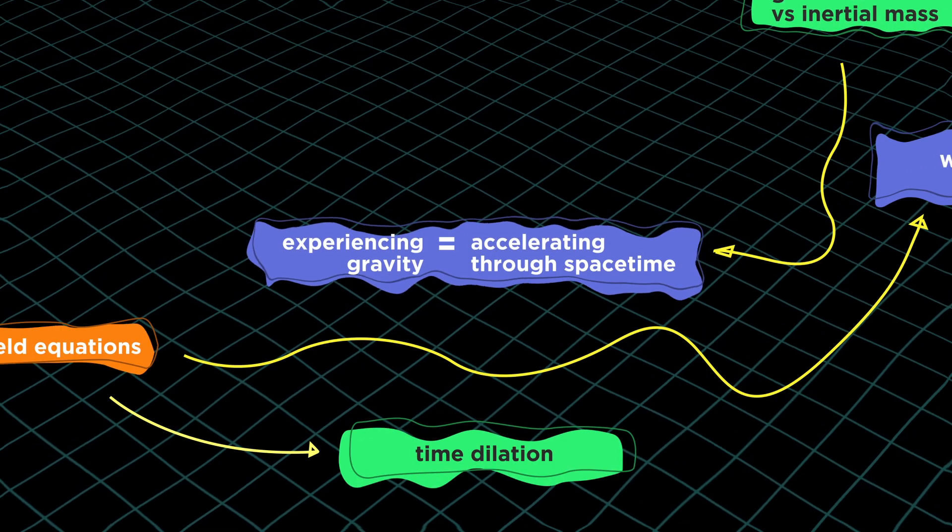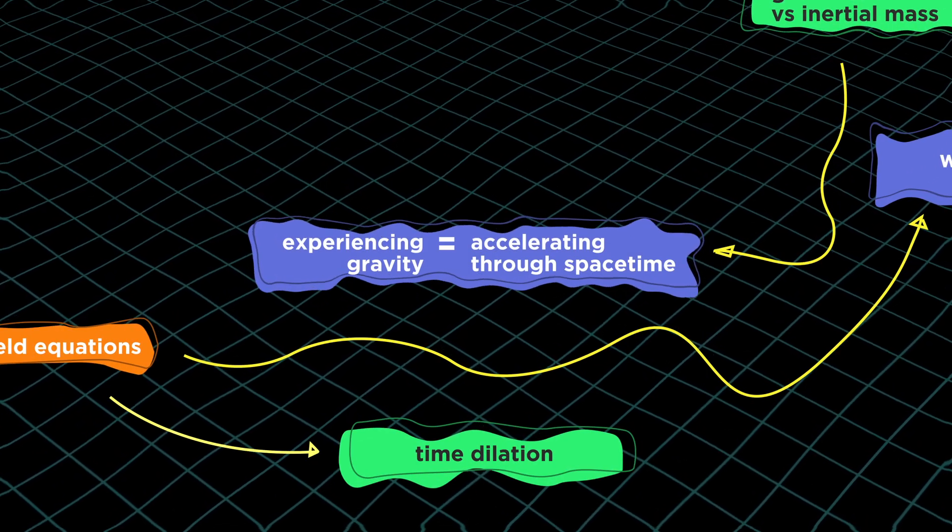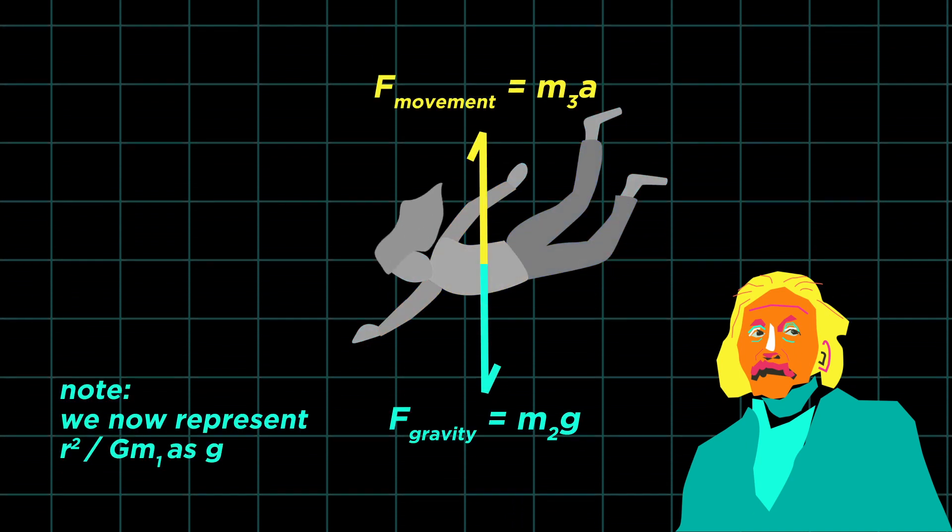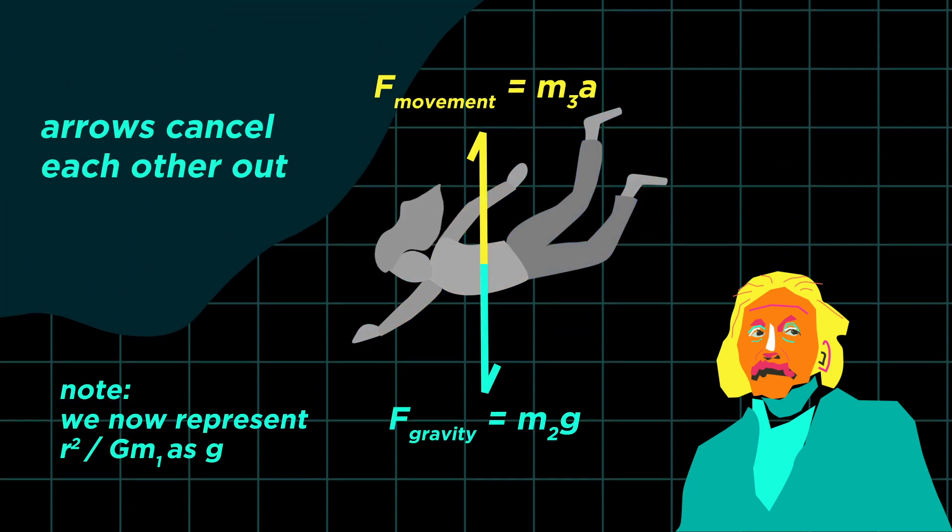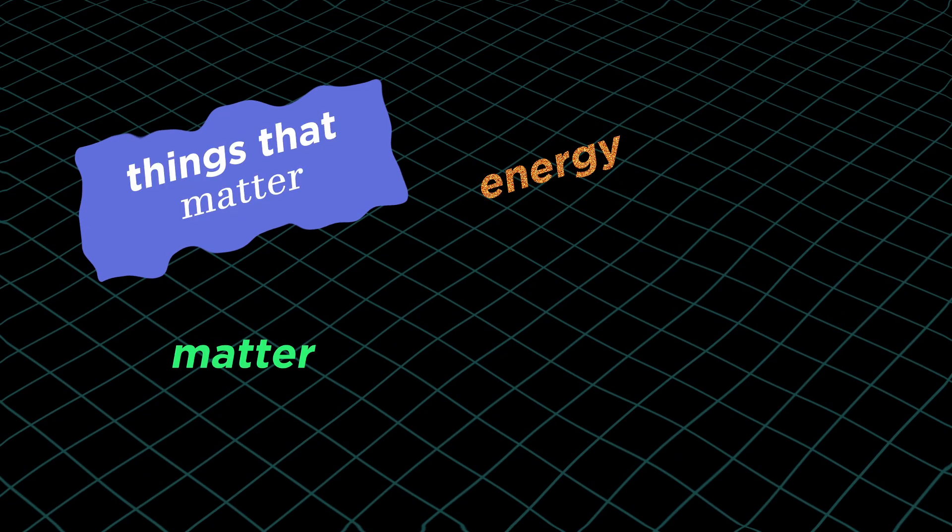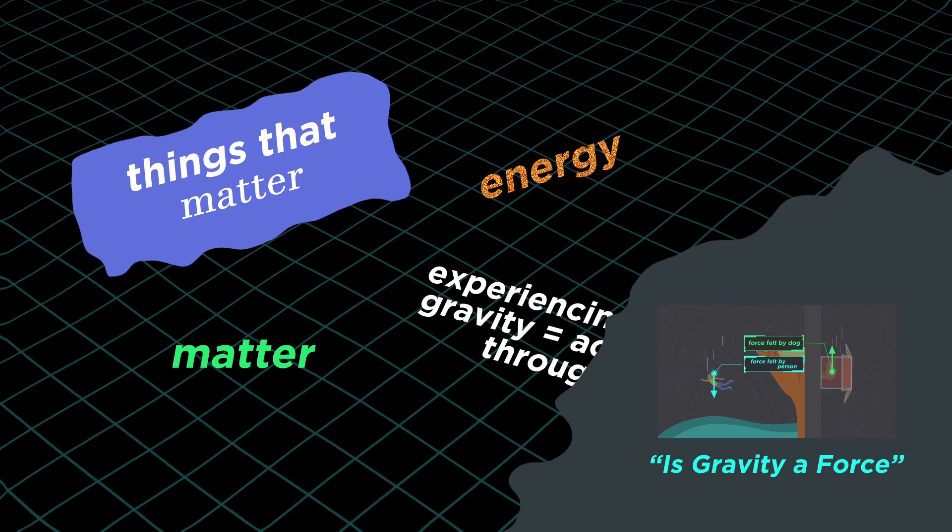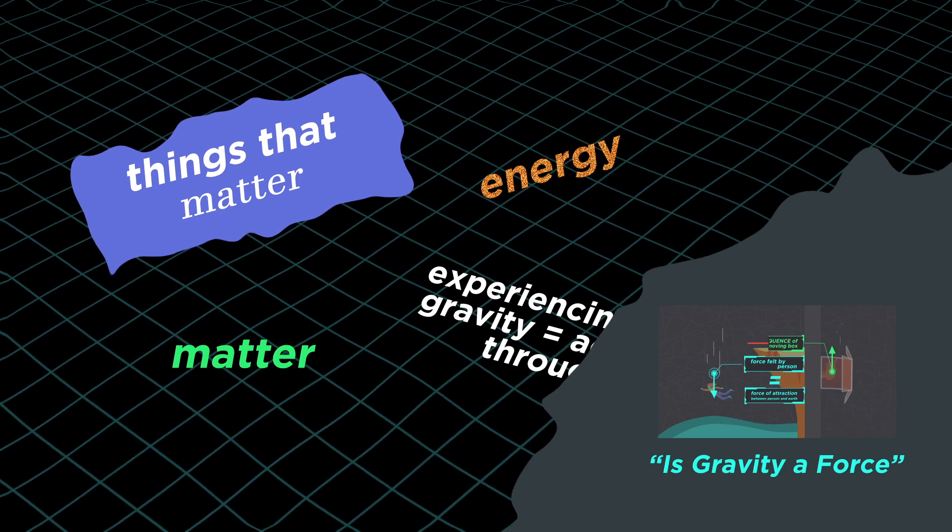So he came up with the equivalence principle. People used to think that in free fall, the gravitational field just disappears. But Einstein had a different interpretation. It's not that it disappears, it's that gravity is the same as acceleration. I talked about this in depth in my last video, so check that out if you haven't.